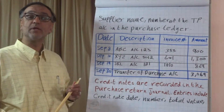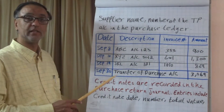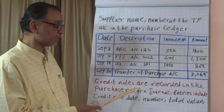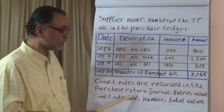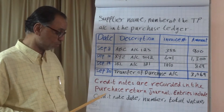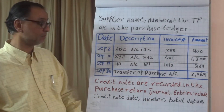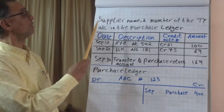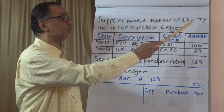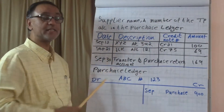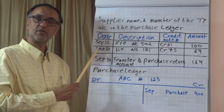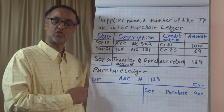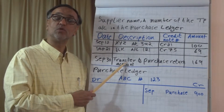Next we talk about purchase returns and the credit note. When we do returns, we issue a credit note and it's reported in the purchase return journal. An entry should include credit note date, number, and the total amount, as well as the supplier name and number in the trade payable account in the purchase ledger. The only difference from the purchase journal is that here we have the credit note number and date instead of the invoice number and date.